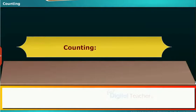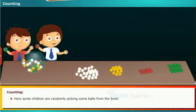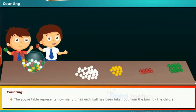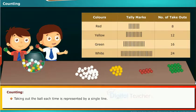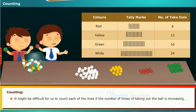Let us see how to count the things using tally marks. Here some children are randomly picking some balls from the bowl. The above table represents how many times each ball has been taken out from the bowl by the children. Taking out the ball each time is represented by a single line. It might be difficult for us to count each of the lines if the number of times of taking out the ball is increasing.